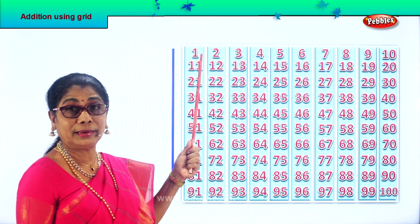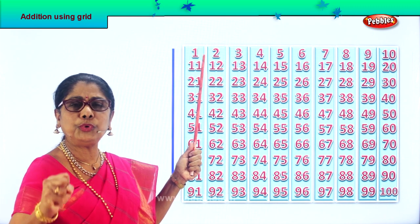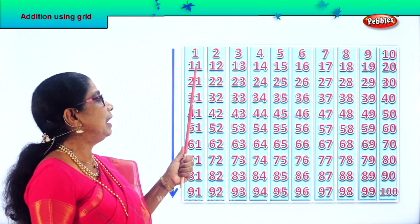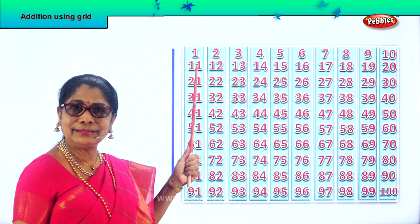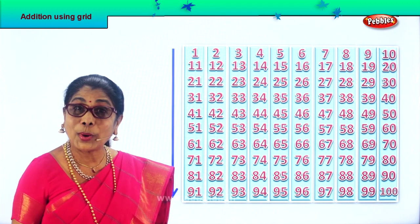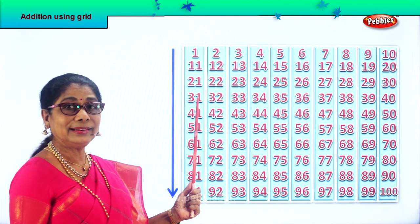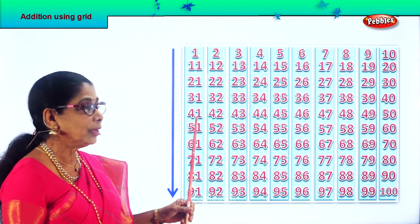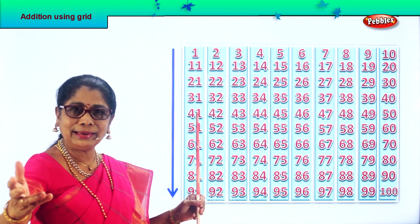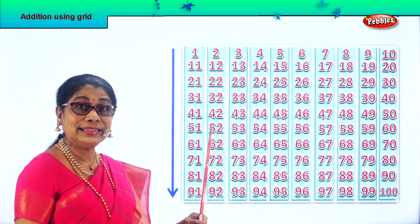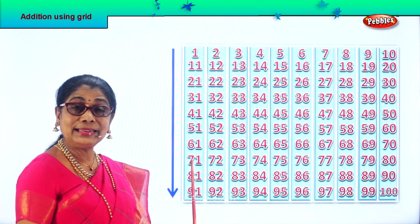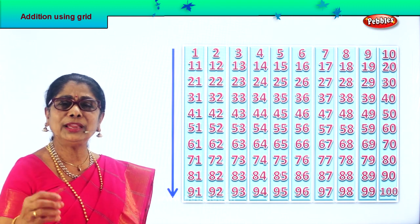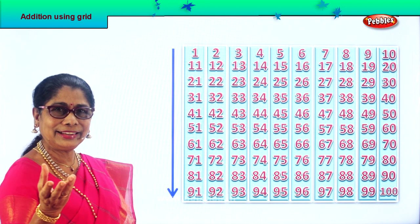Now let's look at the first one. You have 1 here. To 1, if you add 10 — 10 plus 1? 11. Very good. To 11 you add another 10 — 11 plus 10? 21. To 21 you add 10? 31. To 31 you add 10? 41. To 41 you add another 10? 51. Another 10? 61. Another 10? 71. 81 and 91. What are you doing? You add 10 to the number each time.